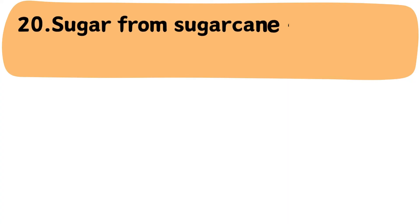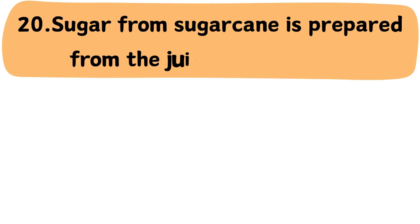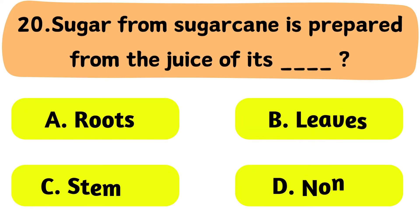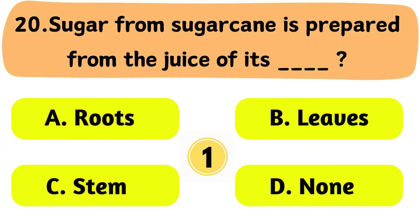Question No. 20: Sugar from sugar cane is prepared from the juice of its what? A. Roots. B. Leaves. C. Stem. D. None.